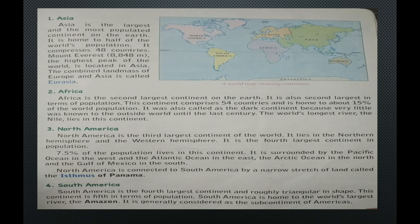Africa is the second largest continent on earth and also second largest in terms of population. It comprises 54 countries and is home to about 15% of the world's population. It was also called the dark continent because very little was known to the outside world until the last century. The world's longest river, the Nile, lies in this continent.